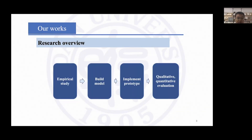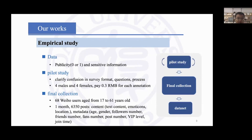We propose a four-step framework to solve these problems. First, in the empirical study, we built a privacy dataset. During one month, we collected about 6,000 posts from 168 Weibo users.